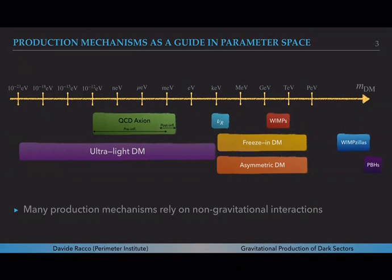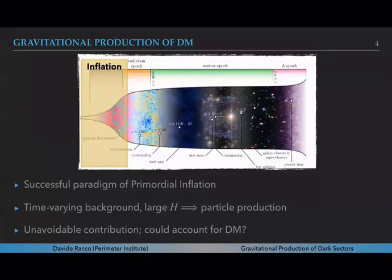By now it is quite widely accepted as a successful paradigm the one of primordial inflation for its many post-dictions and predictions about cosmology. In inflation there is a large Hubble rate and the modes after leaving the Hubble radius stay frozen and their amplitude then is conserved. All of these ingredients make inflation an excellent moment for particle production through gravity, and actually this represents an unavoidable contribution. This production could actually account for all of dark matter.